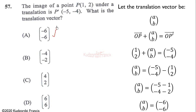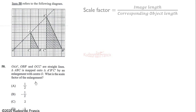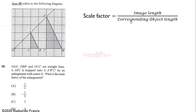Question 58: triangle ABC is mapped onto triangle A'B'C' by an enlargement with center O. What is the scale factor? The scale factor equals image length divided by corresponding object length. Taking A'C' and AC: A'C' = 4 units and AC = 2 units, so the scale factor is 4/2 = 2.